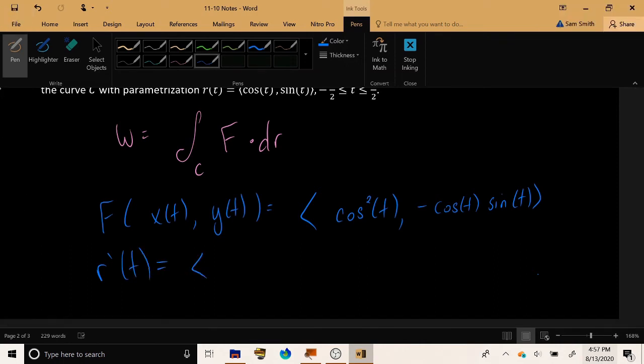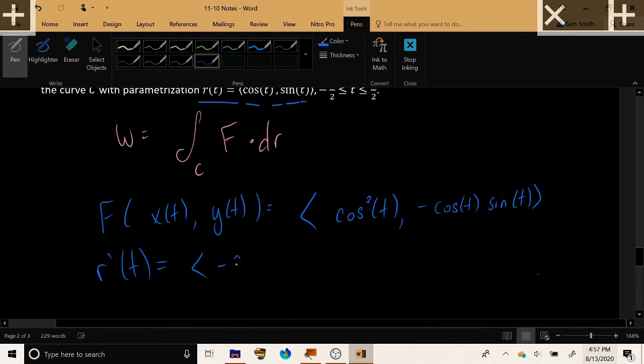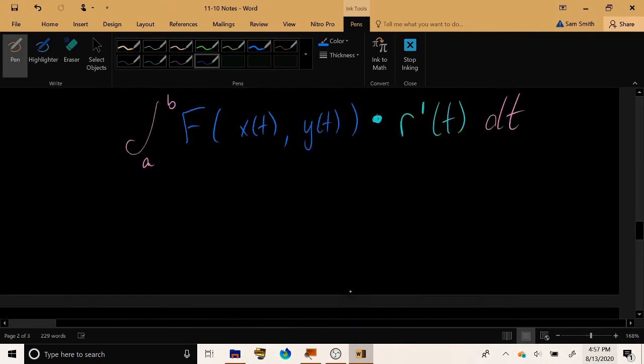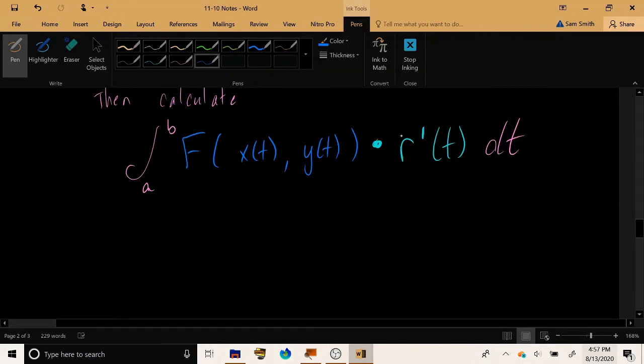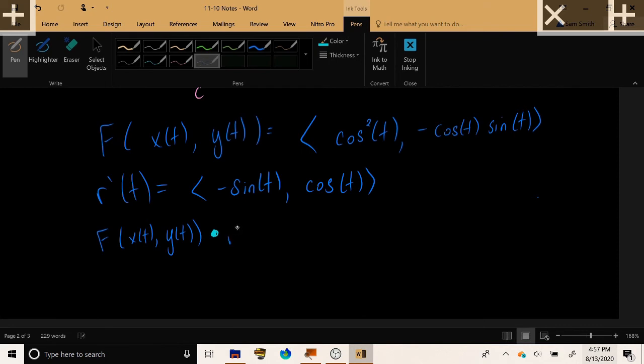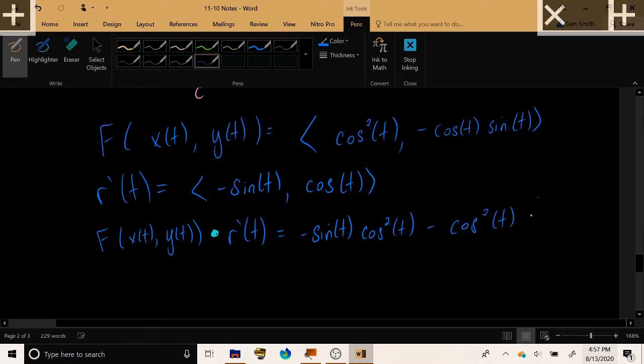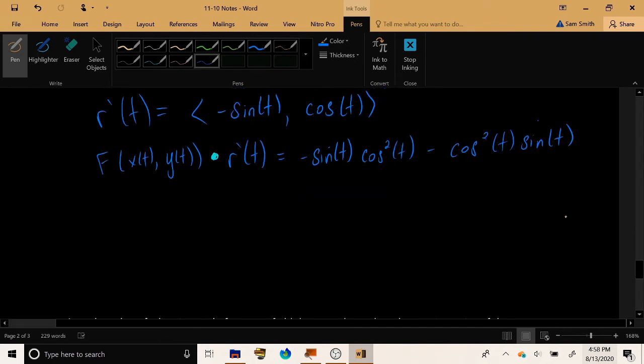Now the next thing that we need to do is we need to take the dot product of the vector field and the velocity vector. So let's do F(x(t), y(t)) dot product with R'(t). So we get cos²t times -sin t. And we get -cos sin times cos. And combining those, we get -2 cos²t sin t.